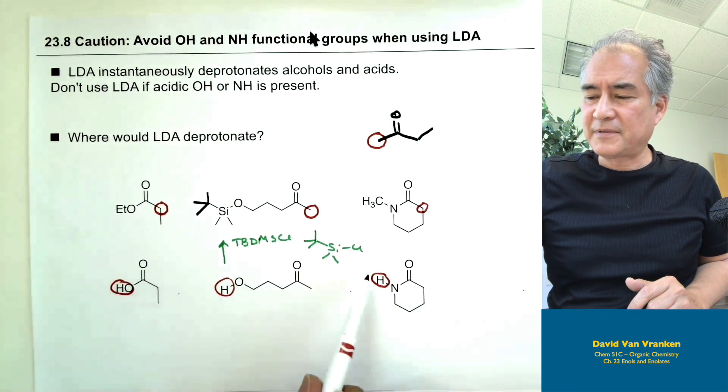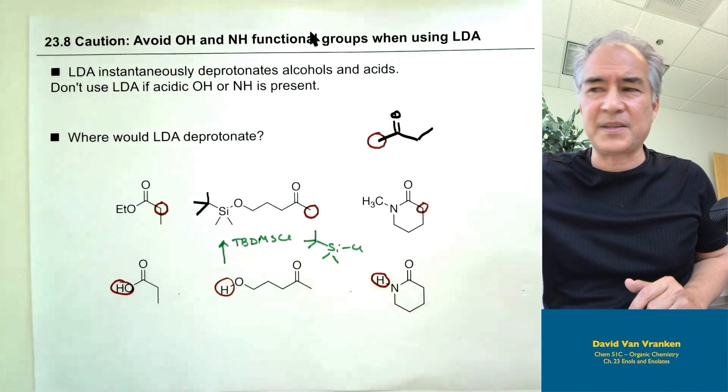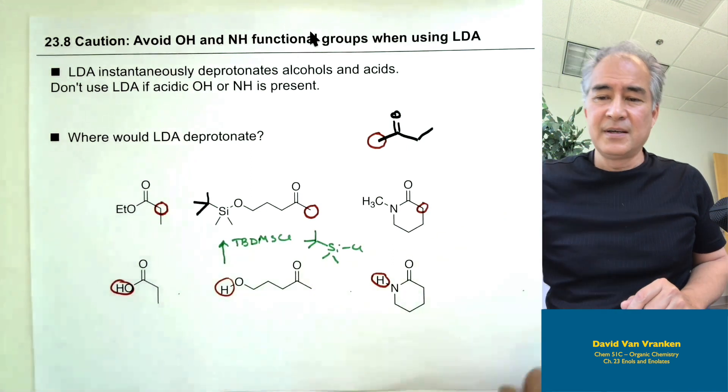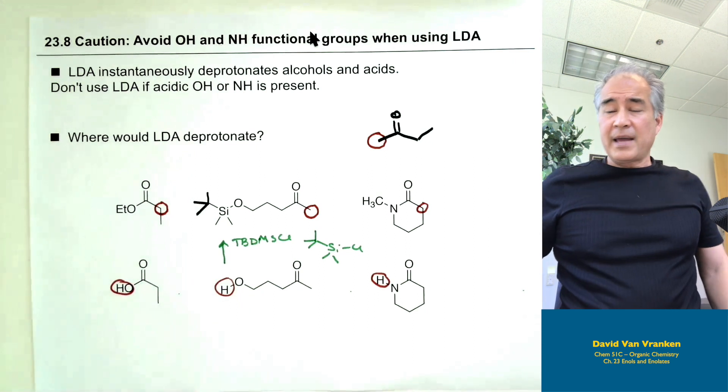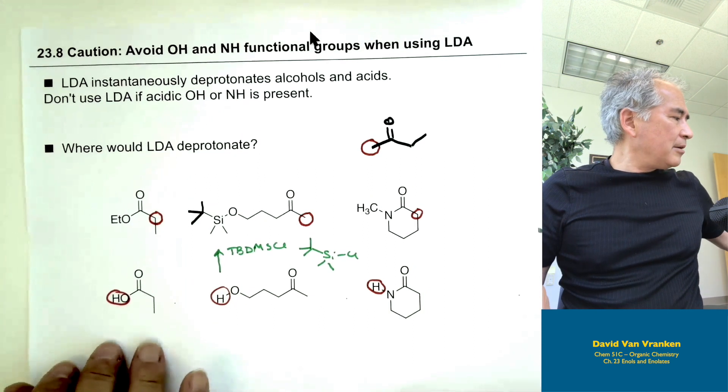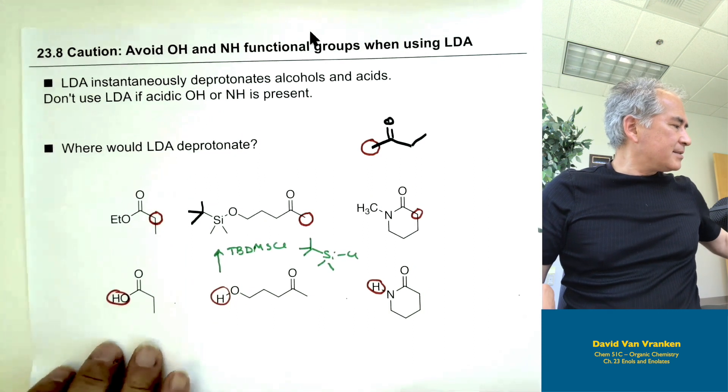And finally, with amides: if you have a carboxamide with an NH or two NHs on it, that's too acidic — similar to water or alcohols. LDA would instantly deprotonate the NH and you'd waste your LDA. So you can't make enolates from amides if the amide has an NH — only when you have two alkyl groups on the nitrogen with no free NHs.